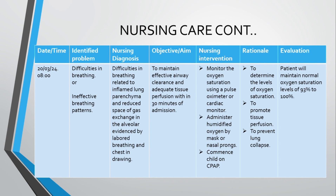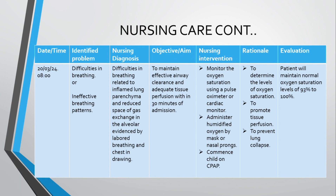As you draw your nursing care plan, it should have the following columns: date and time, identified problems, nursing diagnosis, objective, interventions, rationale for all interventions, and evaluation after your interventions. Make sure you label them accordingly.